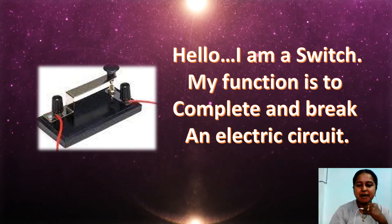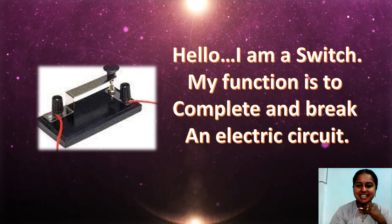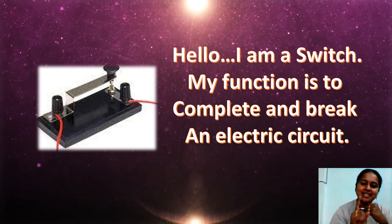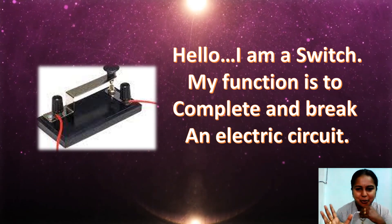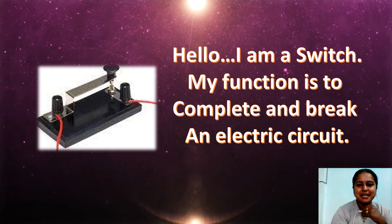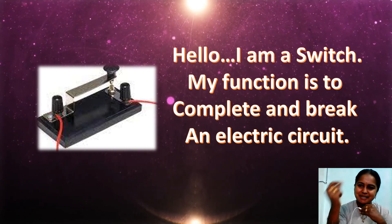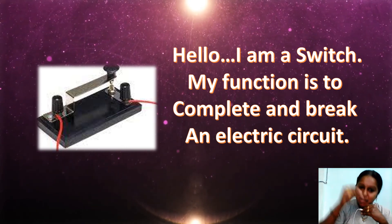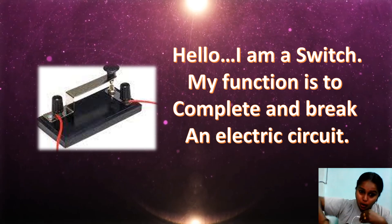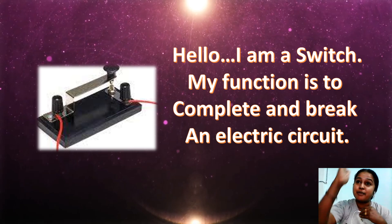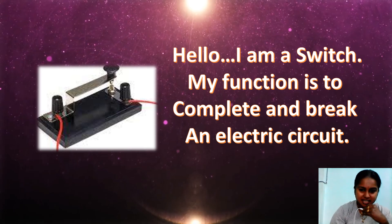I am a switch. My function is to complete and break an electrical circuit. Without the switch the bulb could stay lit, and there's no control over the dry cell. Make sure the circuit has a switch so you can open and close it. When you close the switch, the current will flow through it. When you open it, the current will be blocked — there's no current flow.